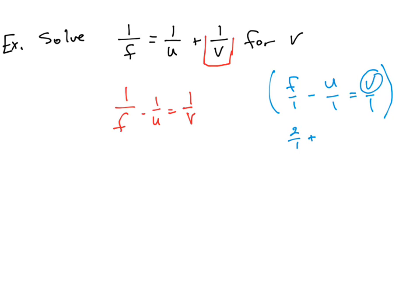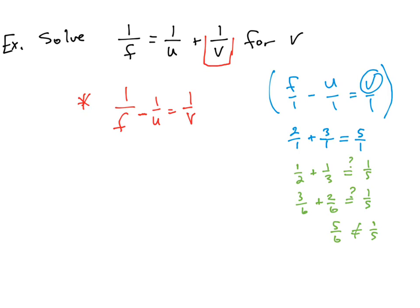Let's look at a numerical example to see why. If 2 over 1 plus 3 over 1 equals 5 over 1, and we take the reciprocal of all fractions, does 1/2 plus 1/3 equal 1/5? Not quite — 1/2 plus 1/3 is 3/6 plus 2/6, which equals 5/6, and that is clearly not equal to 1/5. So we cannot just take the reciprocal of each individual fraction. We first need a common denominator so that we have a single fraction on each side before taking reciprocals.